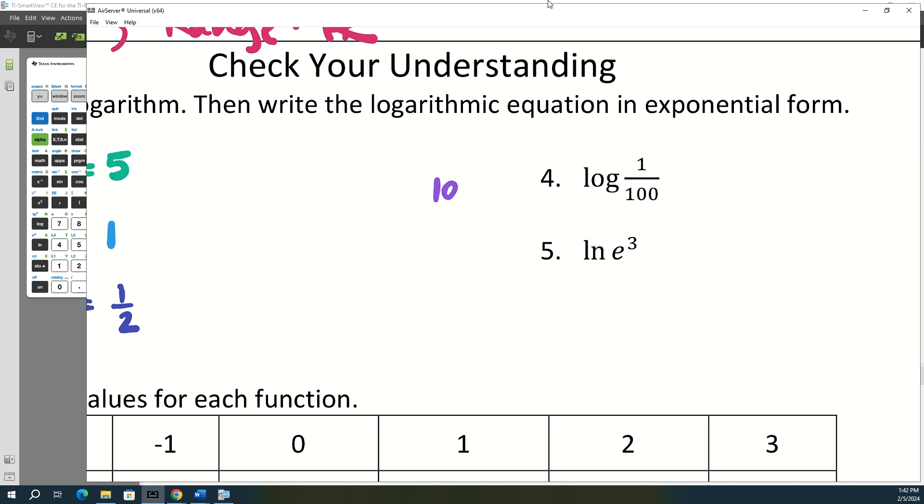All right. So we have a couple more. So on number four, what's the base on number four? 10. If there's no base, it's base 10. So 10 to what power gives you 1 over 100? So what kind of power does it need to be to turn it into a fraction? Negative. Not negative? Yes, because 10 squared is 100. 10 to the negative 2 is 1 over 100.